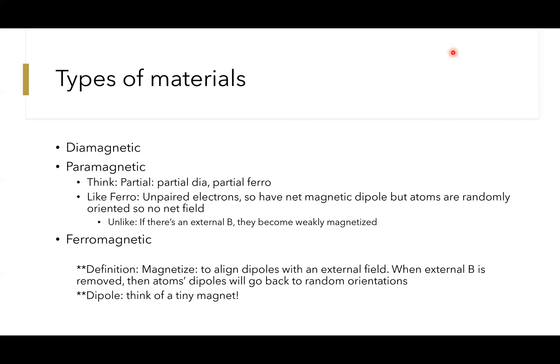And lastly, paramagnetic stuff. Think partial—they're partial diamagnetic, partial ferromagnetic, they're in the middle. They're like ferromagnetic in that they also have unpaired electrons. So while they do have a net magnetic dipole, atoms are randomly oriented, so there's actually no net magnetic field.